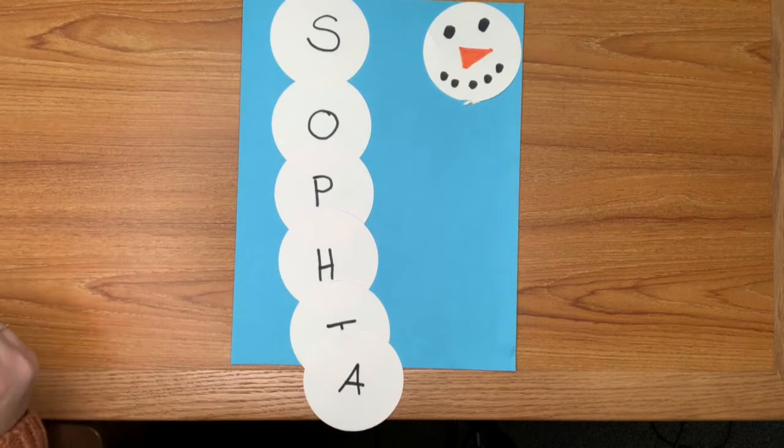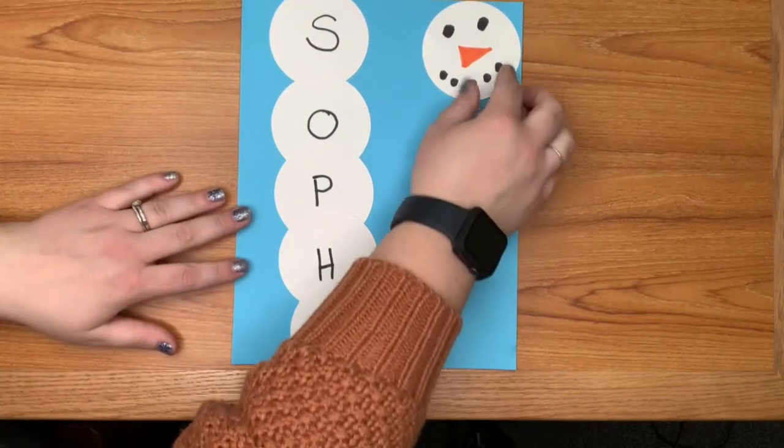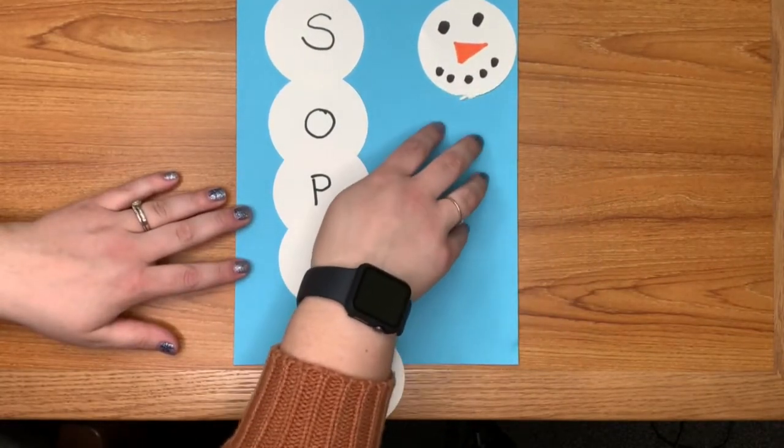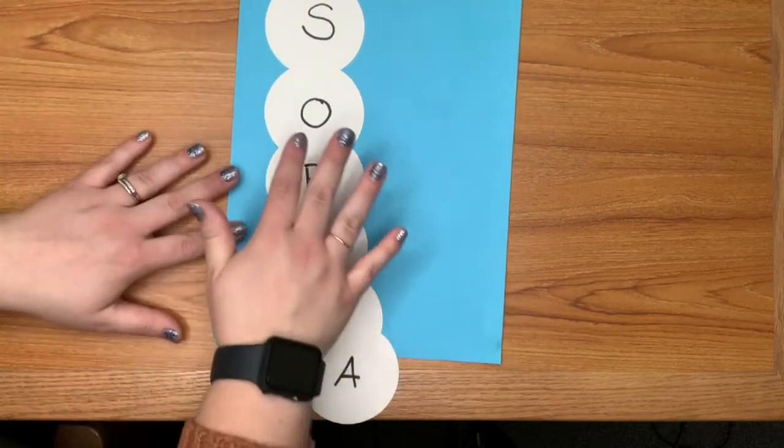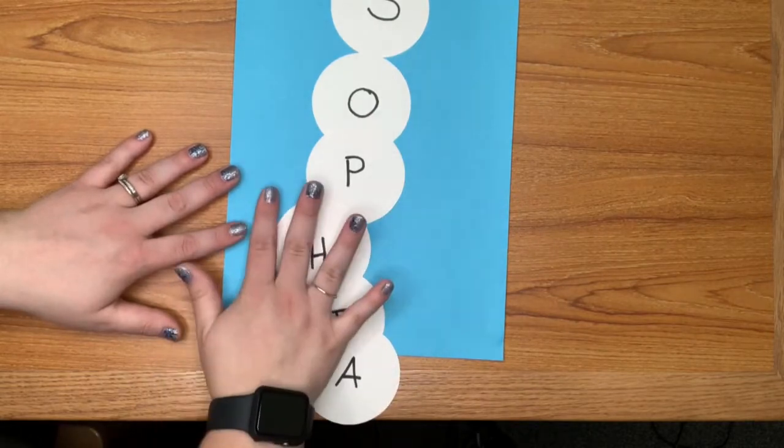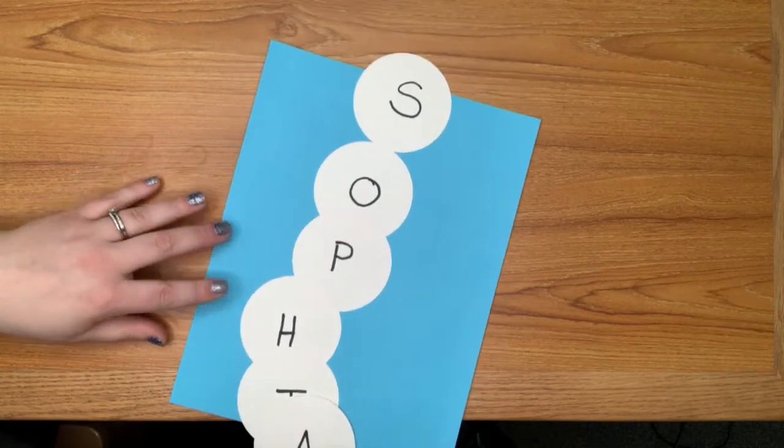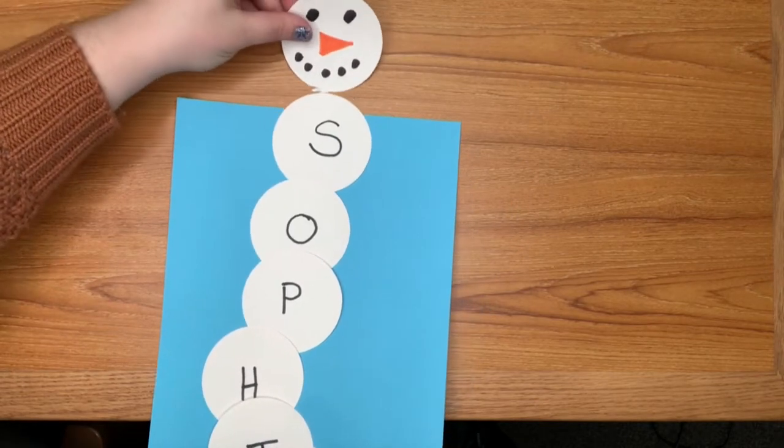So now that I got that part done, what I'm going to do is glue my snowballs onto our background here. So I'm going to actually start at the top and I'm going to glue my name on first and then I'm going to glue my snowman face to the top.